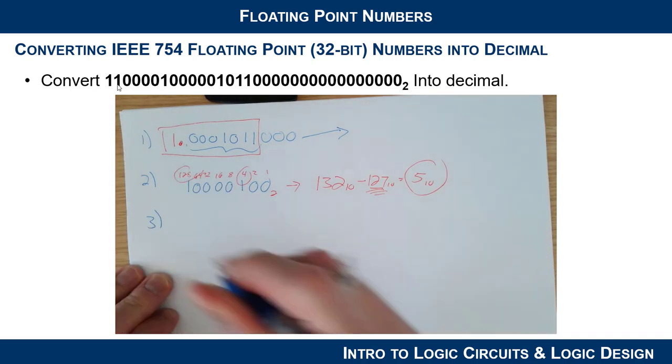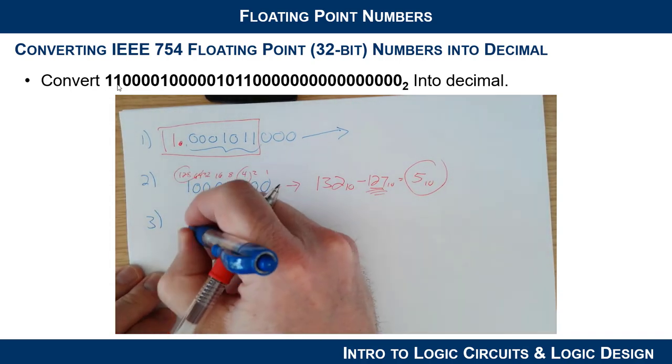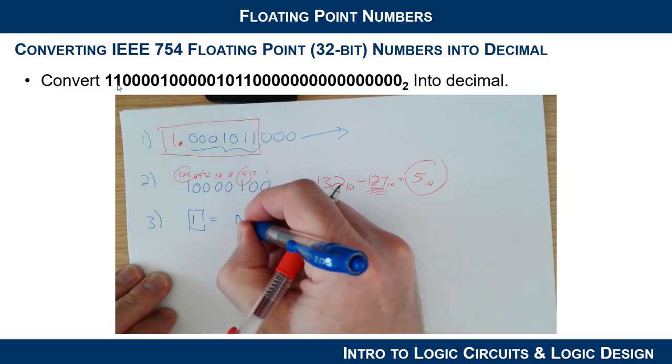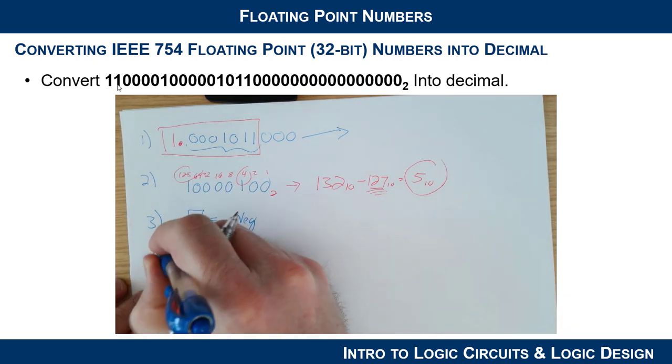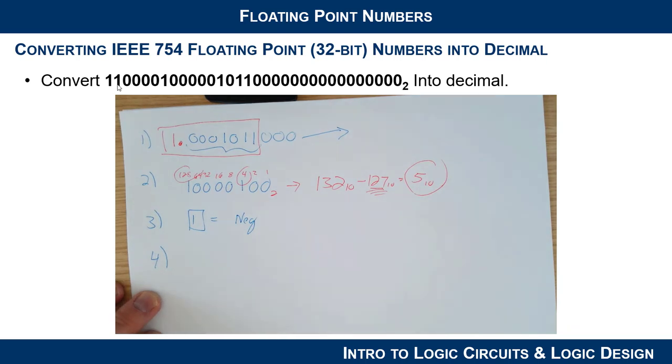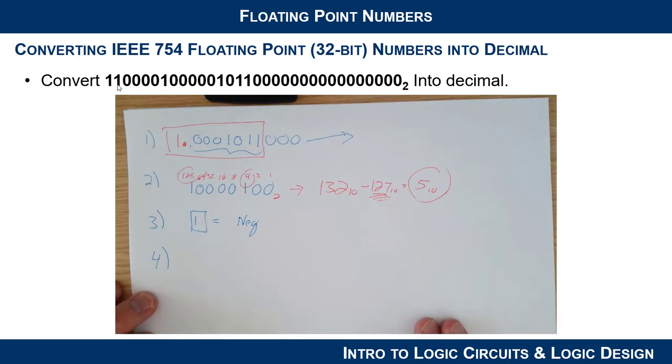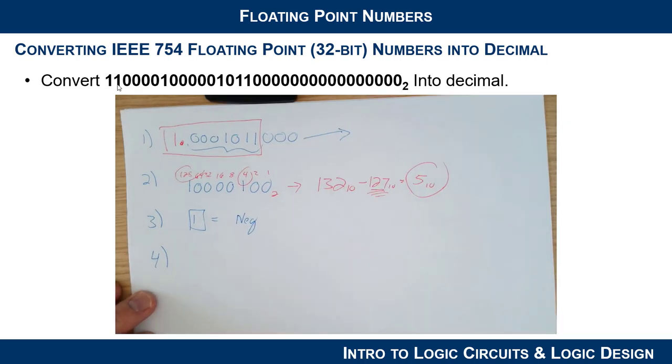So then third, the sign bit, which is the easy one, is it is 1, and that means it is a negative number. So we have everything that we need in order to create the scientific notation of the binary number.